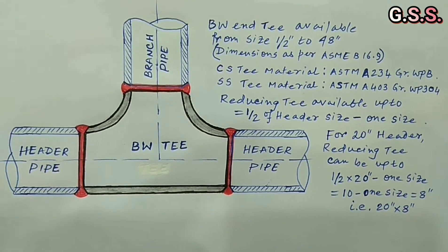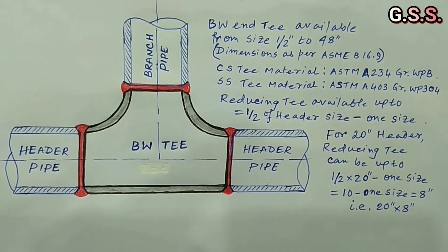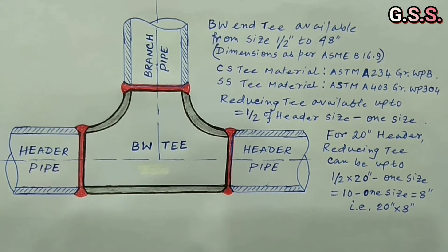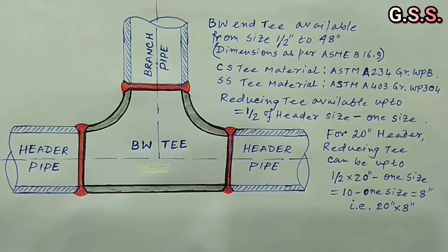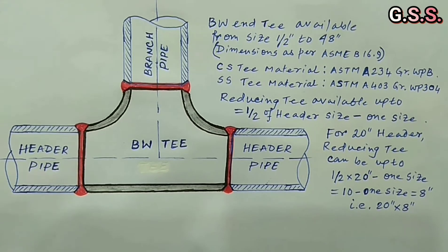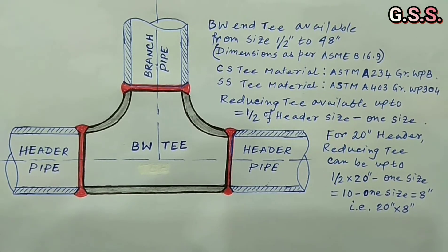Similarly for 4 inch header size, reducing T is possible up to 4 inch by 1 and half inch size. Similarly 48 inch by 22 inch reducing T is possible. Same philosophy is applicable for reducer also.